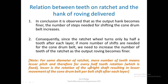If more teeth are put on a ratchet of the same diameter, the pitch will be lesser. With every half-tooth rotation — which is fixed regardless of the number of teeth — a lesser-pitch ratchet will turn less, so the rotation of the upright shaft is also less, resulting in a smaller movement of the cone drum belt per shift after each layer. Therefore, the ratchet will have more teeth in the case of a finer hank of roving.